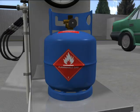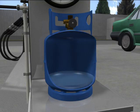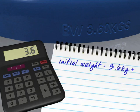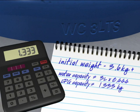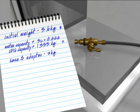Calculate the target weight. This is the empty weight, plus the LPG capacity, which is the water capacity multiplied by the LPG filling ratio, 0.444, plus the weight of the filling hose and adapter.